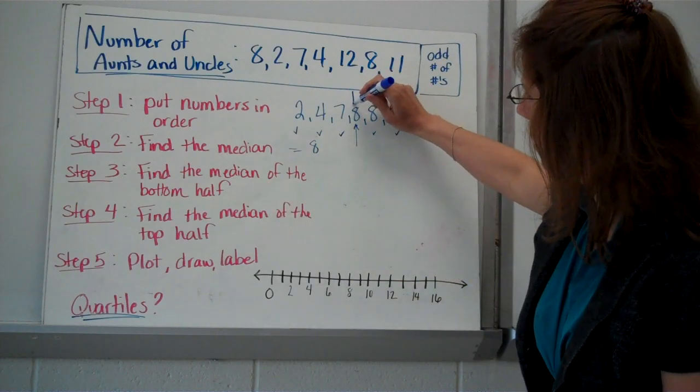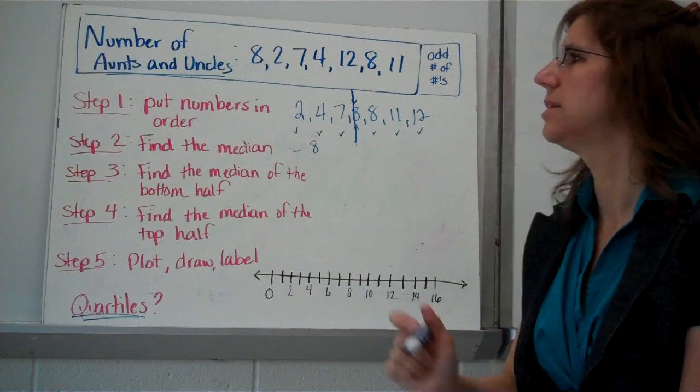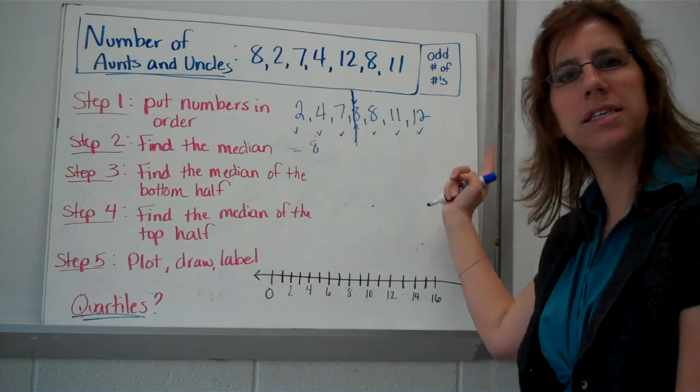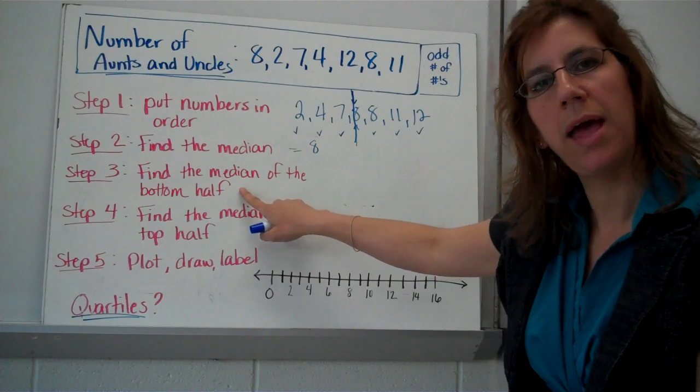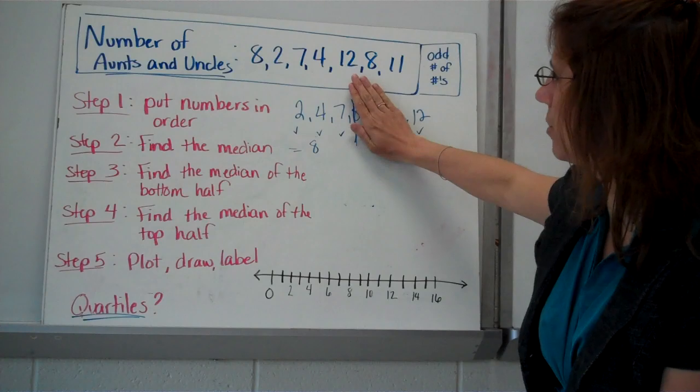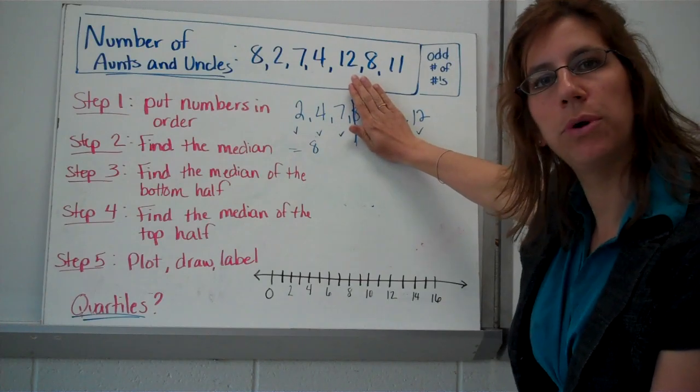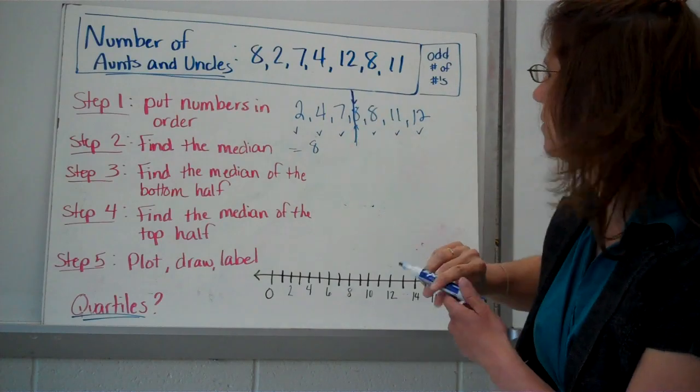Next, notice how if I were to put a line, let's say, through that 8, we've got a bottom half and a top half. I want you to find the median of the bottom half. Median of the bottom half. So you're going to be ignoring all these other numbers, and you're looking at the 2, the 4, and the 7, and the median of that would be 4. Very good.